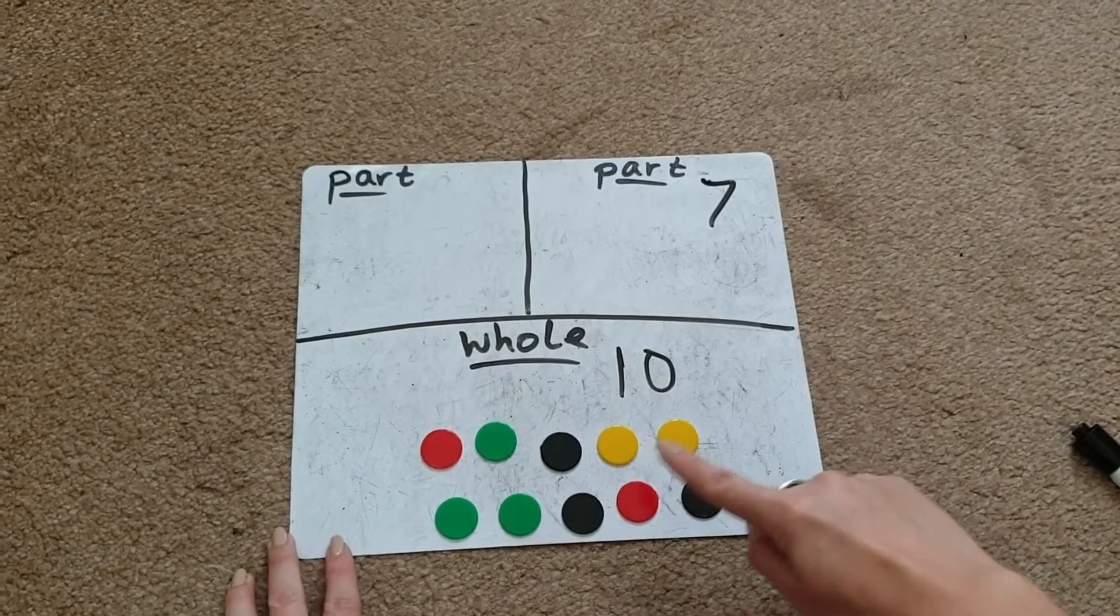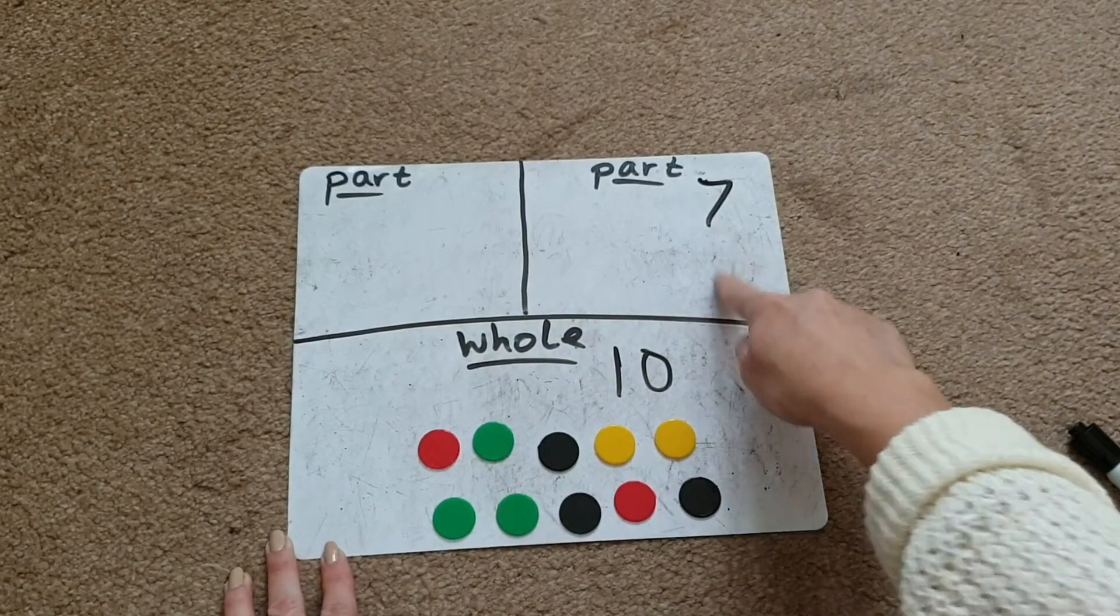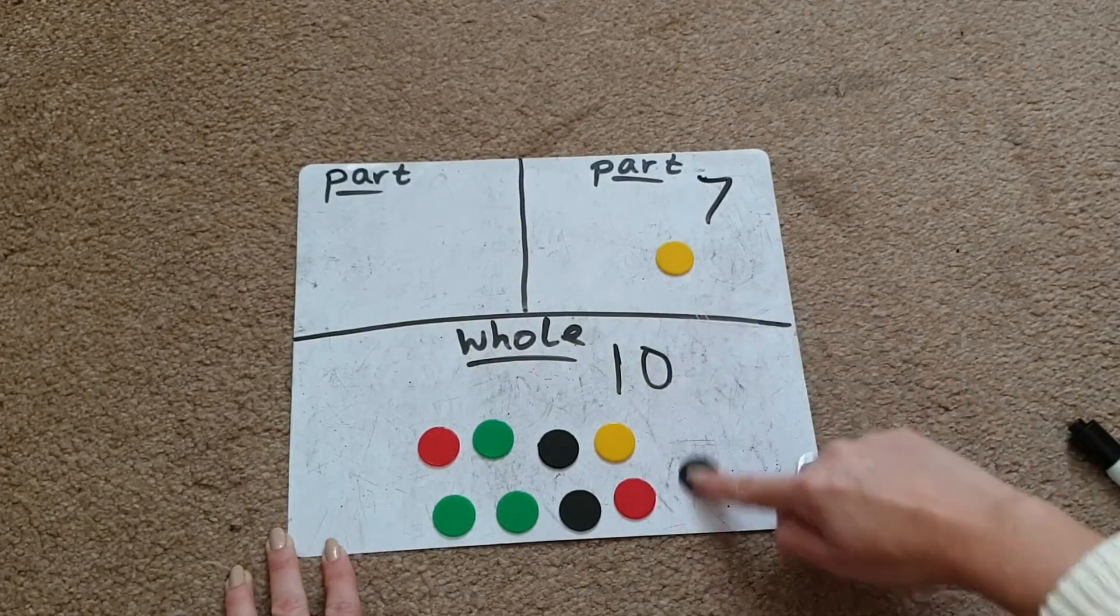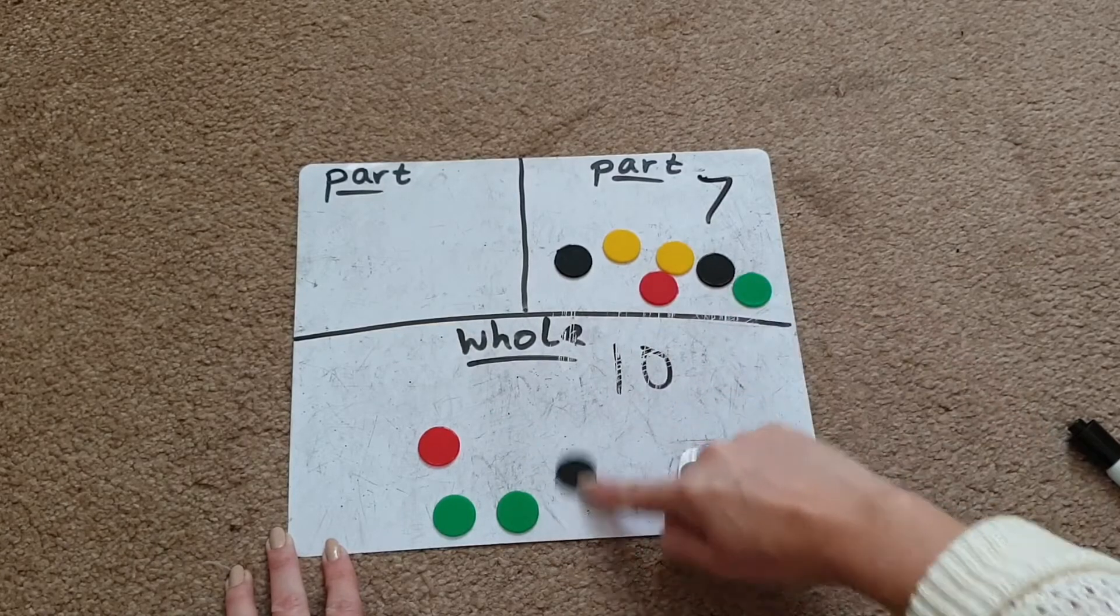Now what we're going to do is move 7 of these objects up to this part here, since we've got the number 7 here. We're just going to slide them up: 1, 2, 3, 4, 5, 6, 7.